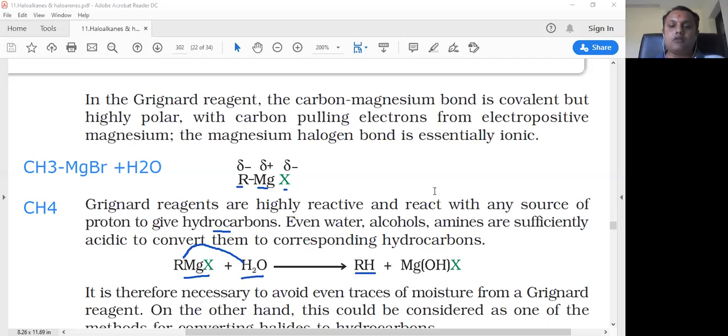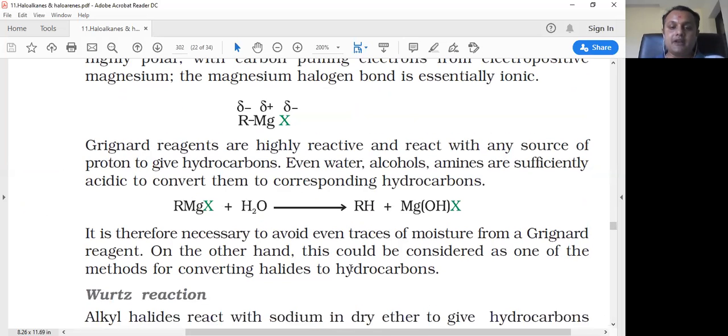Even water, alcohols, and amines are sufficiently acidic to convert them to corresponding hydrocarbons. This could be considered as one of the methods for converting halides to hydrocarbons.